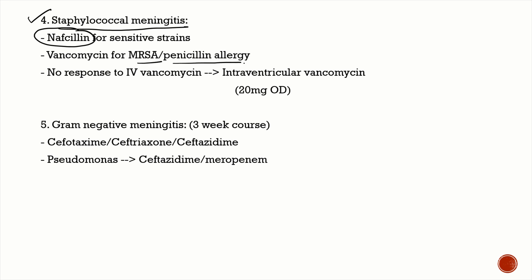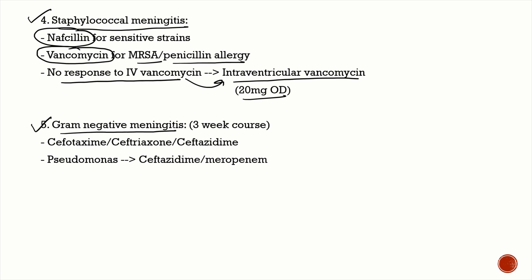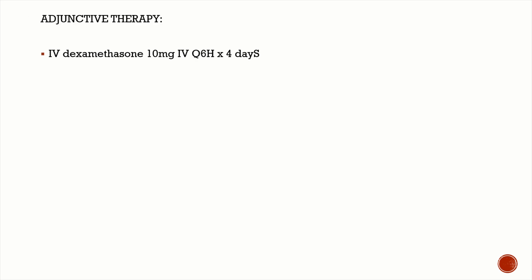For staphylococcal meningitis, use nafcillin for sensitive strains; for MRSA or penicillin allergy, vancomycin is the drug of choice — with intraventricular vancomycin 20 mg once daily if IV vancomycin fails. For gram-negative meningitis due to Pseudomonas, give ceftazidime or meropenem; for other gram-negative organisms, cefotaxime, ceftriaxone, or ceftazidime may be used.